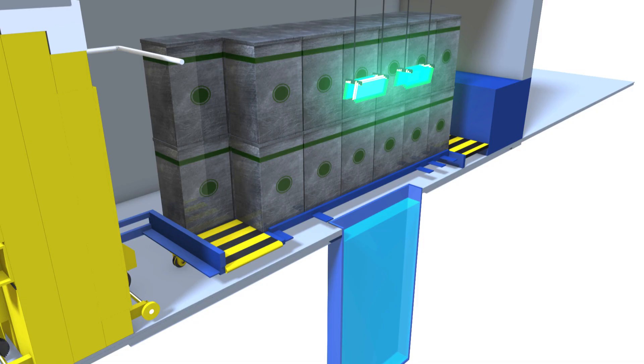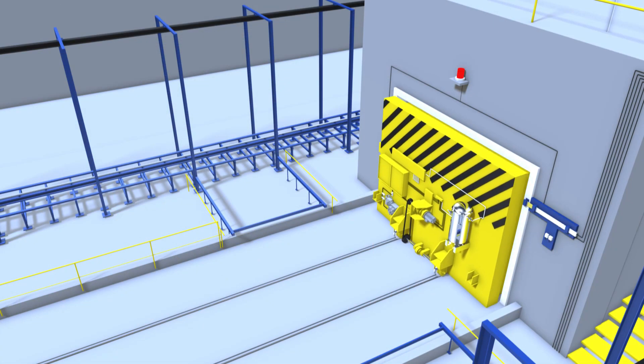After desired exposure, the cobalt-60 source is lowered into its water shield and the door opens to complete the cycle.